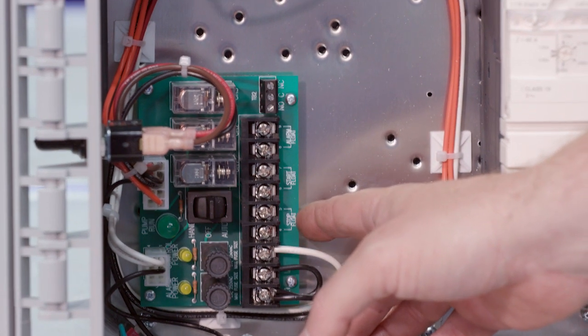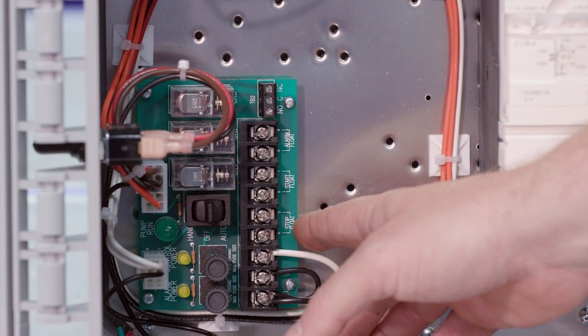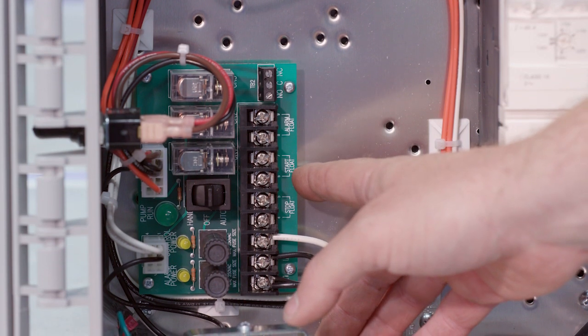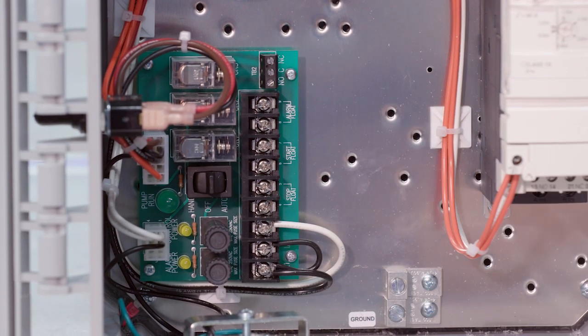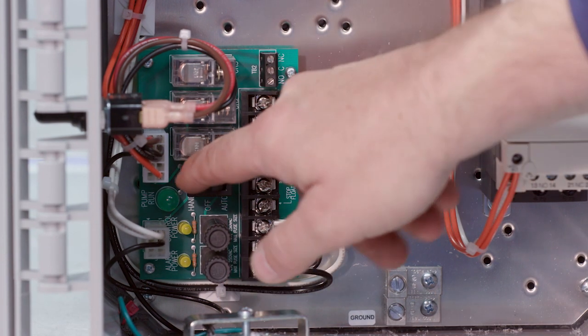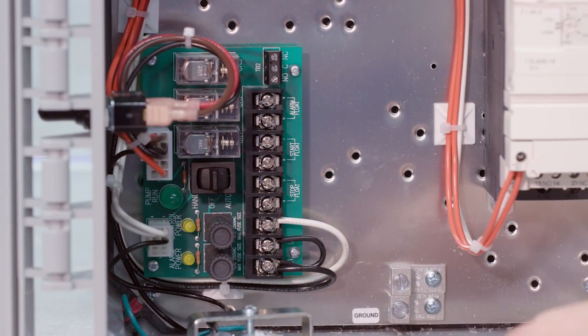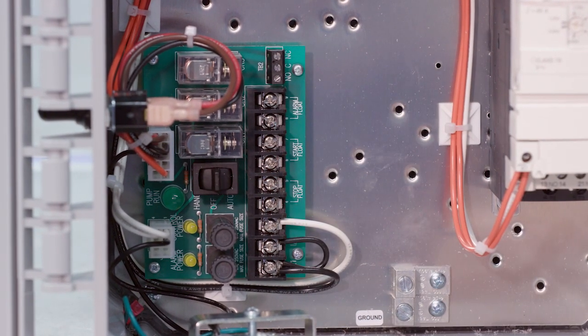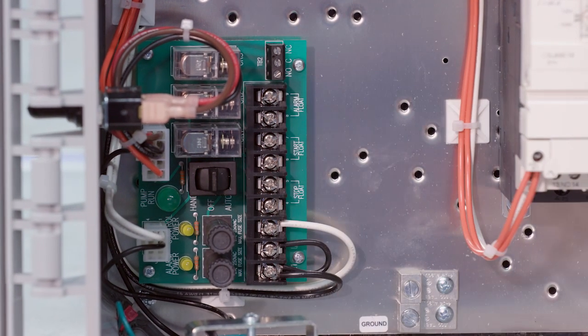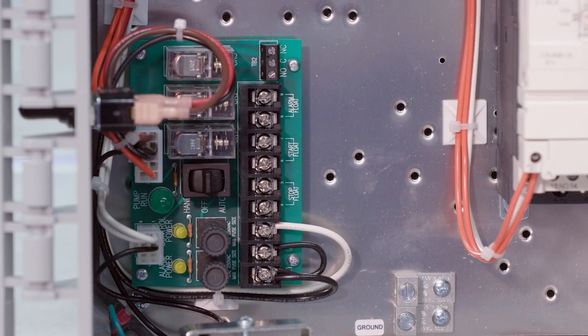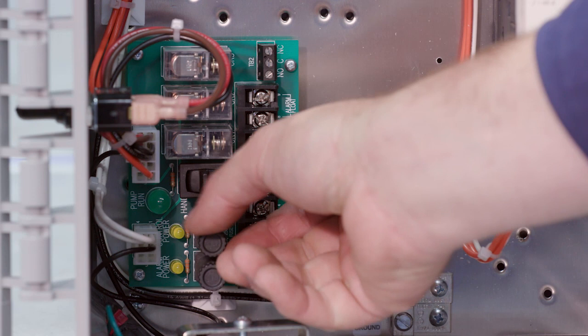Lastly, we'll just do a quick review of the control board. One thing that you'll notice is it's nicely labeled with your floats: stop or off, start or on float, and your alarm float. You've got your HOA switch here and some indicators of alarm, power, control power, and pump run, and your fuses, which are easy to get to and easy to replace.